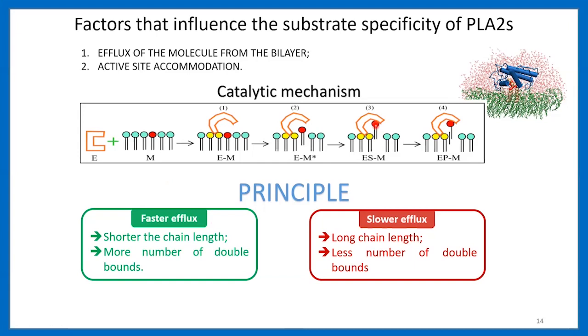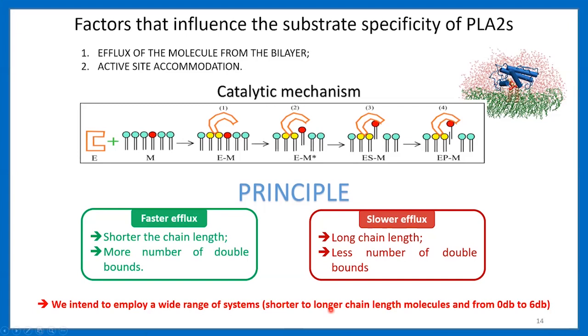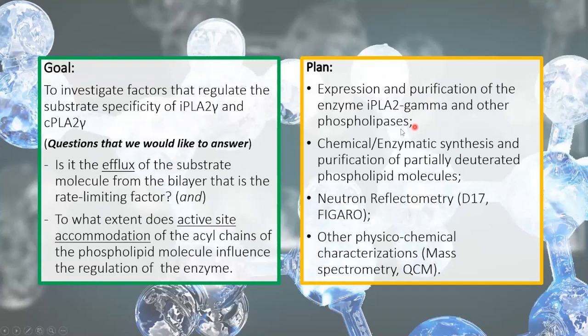We want to essentially synthesize some phospholipids with various chain lengths and degrees of unsaturation. The overall plan is: expression of the two enzymes, synthesis of the phospholipids, neutron reflectometry to study the catalytic mechanism, and other physicochemical characterizations.